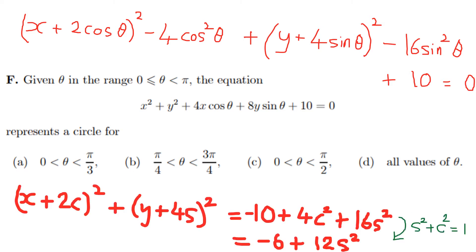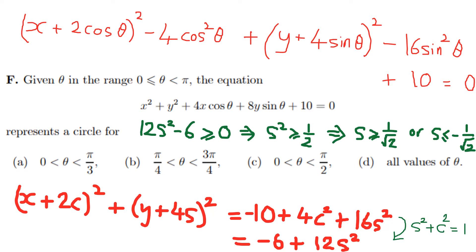Taking everything except the squared brackets over to the right-hand side gives the standard form, where the right-hand side is equivalent to the radius squared. I can take 4cos² and 4sin² together to equal 4, because sin² + cos² = 1 of course, and it tidies up to −6 + 12sin²θ. That's the radius squared.